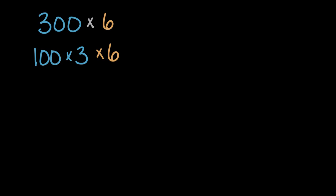And then from here, we can multiply. And let's start with our one-digit numbers. Let's multiply those first. Three times six is 18. And then we still have 18 times 100, or 18 hundreds.